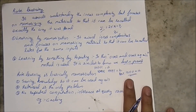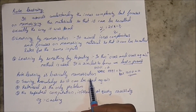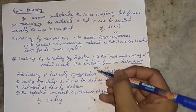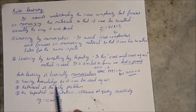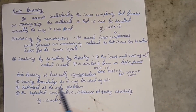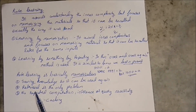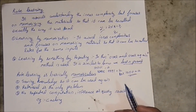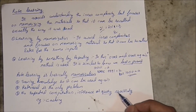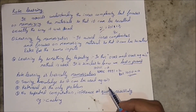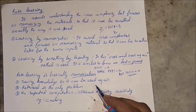In rote learning, which is basically memorization or by-hearting, it saves knowledge so that it can be used again. Retrieval is the only problem because after computing once, the result is stored in a database which consumes space. No repeated computation, inference, or query is necessary — like SQL queries don't need to be run repeatedly.